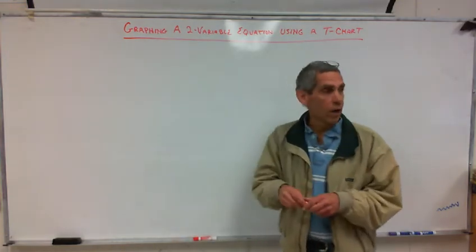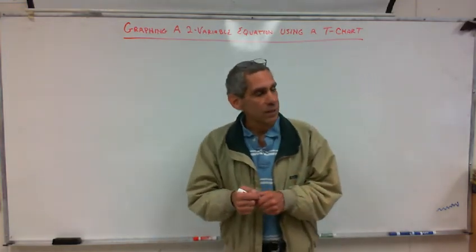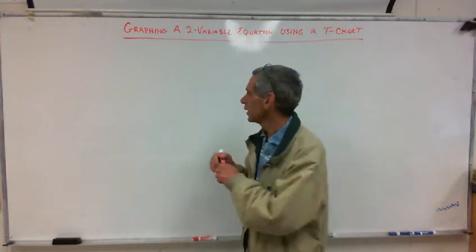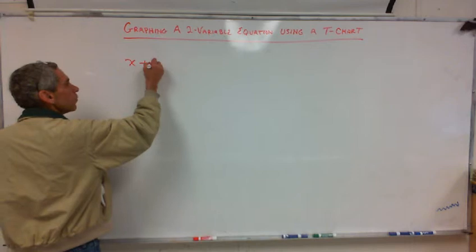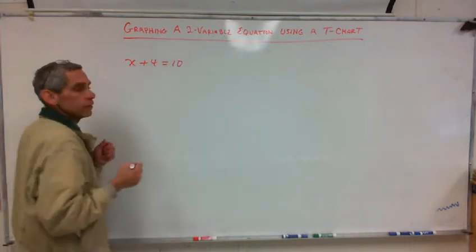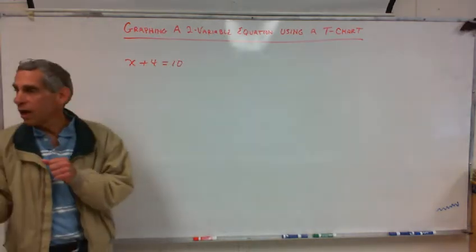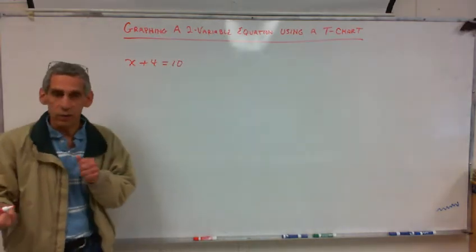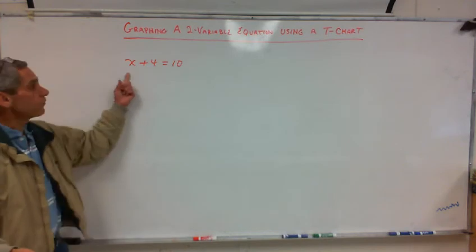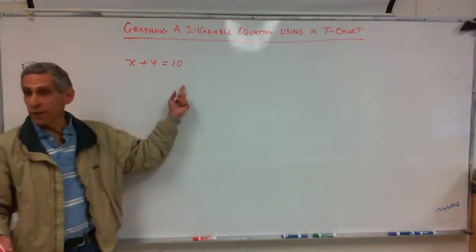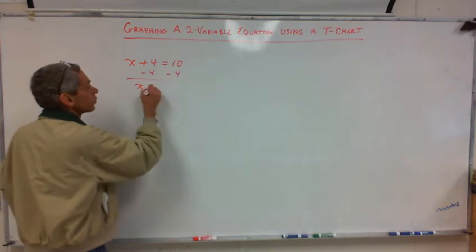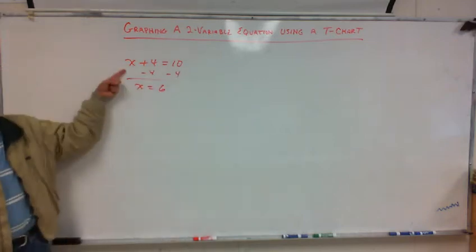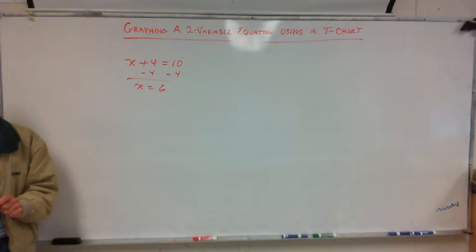I'm just going to use x's and y's. Now, the thing is, when you had one variable, like this, when you had one variable, x plus 4 equals 10, you could always solve for x. You always knew what x was. Always. One variable, one equation, no problem, you can solve it. Watch this. Minus 4 minus 4. x is equal to 6.